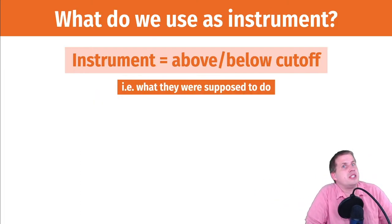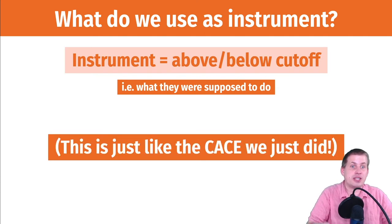So to do this, we need to throw an instrument into the model. And what do we use? It's not a weird instrument. Again, the instrument here is just an indicator variable that shows what they were supposed to do. So it's true if they're above the cutoff, it's false if they're below the cutoff. So you basically make a column that measures what they were supposed to do and then you use that as the instrument.